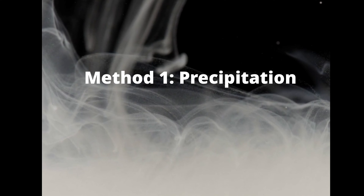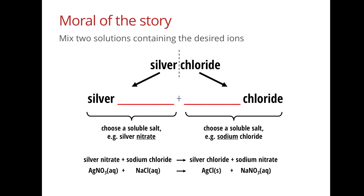Let's look at choosing reagents for each method. For precipitation — for example, silver chloride — we break it into two parts and need a soluble silver compound and a soluble chloride compound, since both starting materials must be soluble. We could use silver nitrate (all nitrates are soluble) and sodium chloride, potassium chloride, or ammonium chloride. For barium sulfate, we would use barium nitrate and sodium sulfate, both soluble.